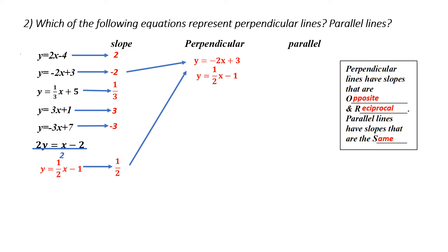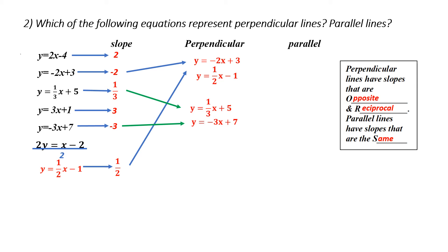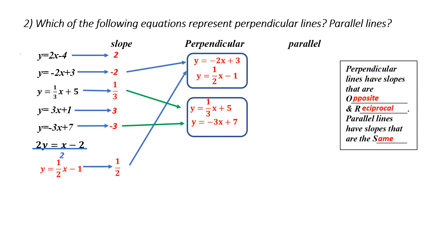Let's go to the next one — one-third. What would be perpendicular to one-third? The reciprocal would be three over one, and the opposite would be negative. So negative three over one, or negative three. And yes, we have two of those that are the same. I now go to the fourth equation, which has a slope of three. The reciprocal and opposite of three would be negative one over three, which is not one of the slopes that I've got. Therefore, those are my two sets of perpendicular equations.